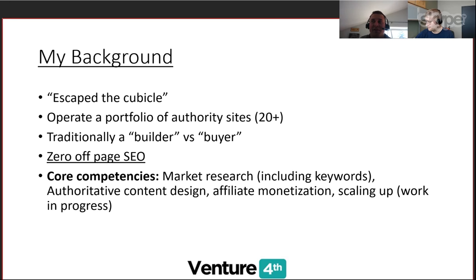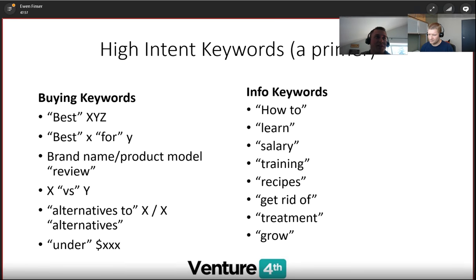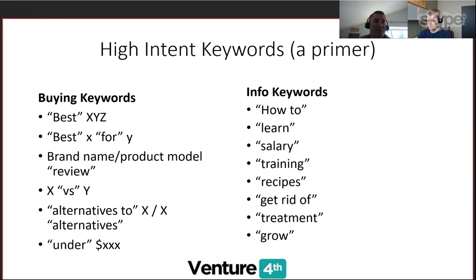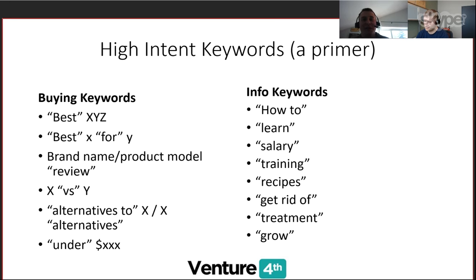So I'll move on to a little primer here on high intent keywords. Some of you may have seen this in different places. This isn't an exhaustive list, but these are some of the more interesting ones I've seen. For buying keywords — particularly for Amazon sites when you're trying to make product recommendations — these are some of the better keywords. So 'best X', like best running shoes or best CrossFit training shoes. A lot of people build whole sites just around best keywords — top 10 type of sites.